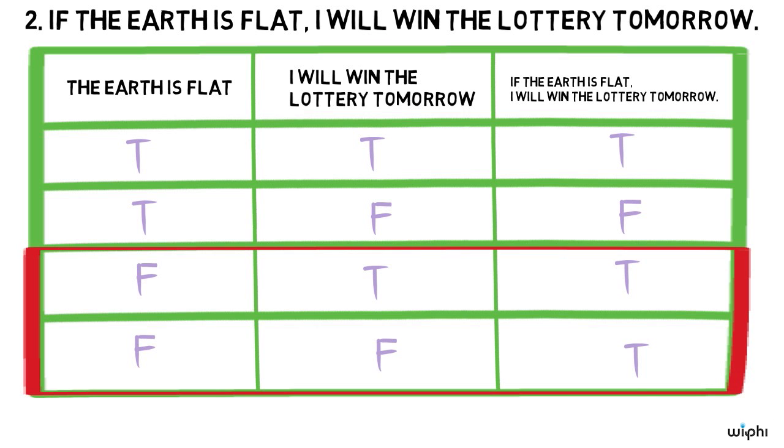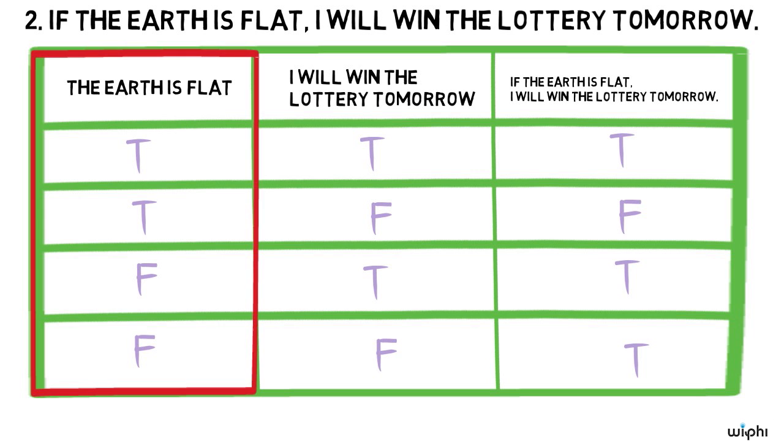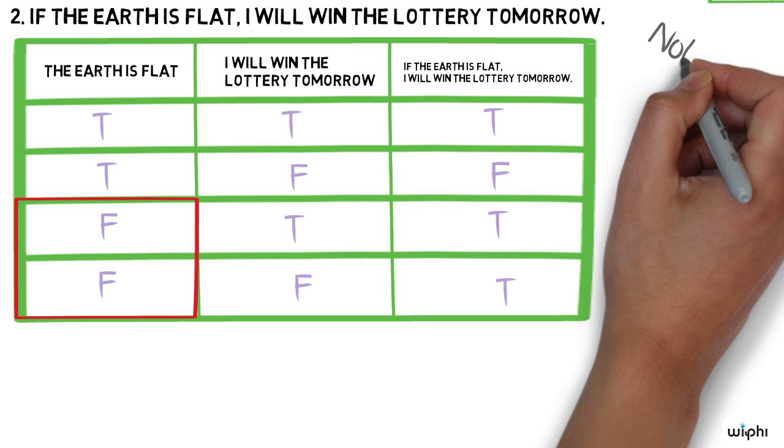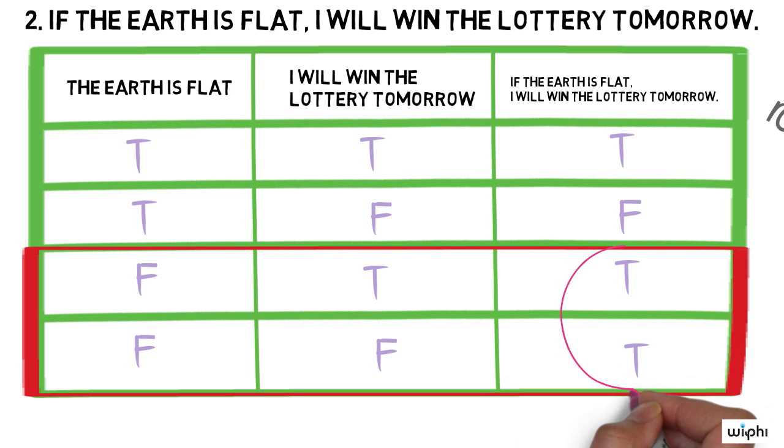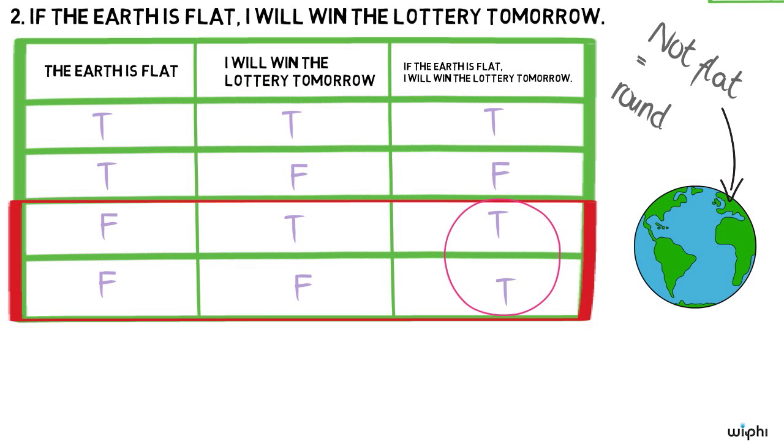Again, let's focus on rows three and four of the truth table. They represent the condition that the earth is not flat. Let's just assume for the sake of conversation that if the earth is not flat, then it's round. So in the condition that the earth is round, the theory says that two is true. That is, since the earth in fact is round, the conditional if the earth is flat, I will win the lottery tomorrow, is true.